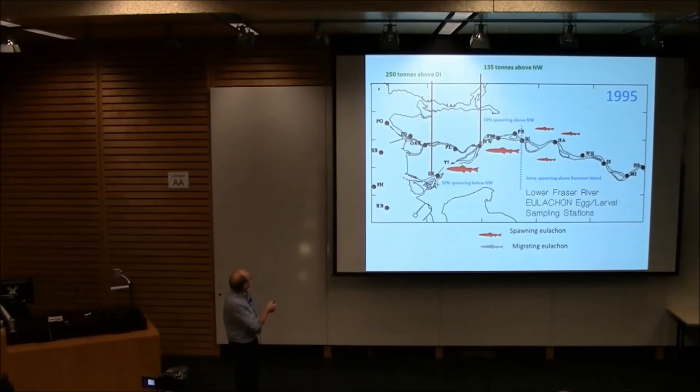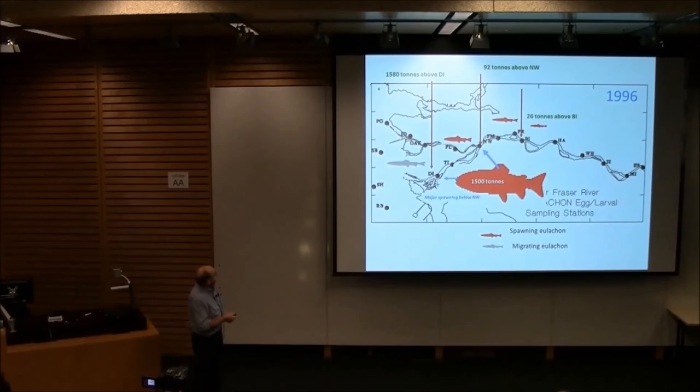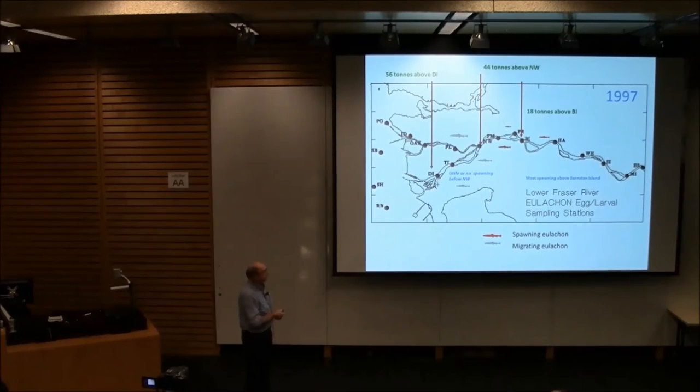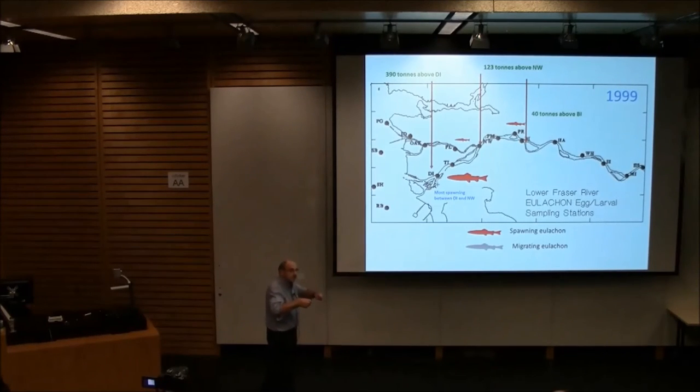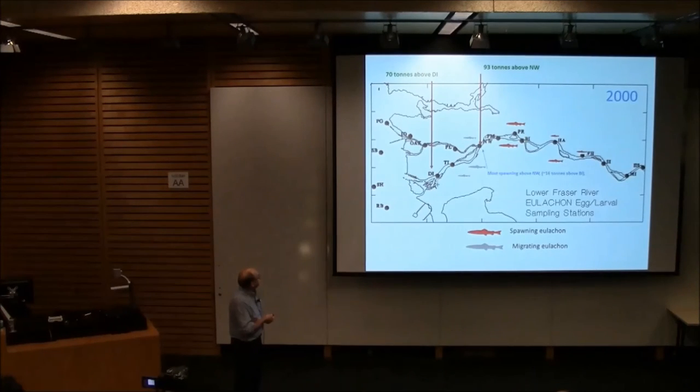In 1996, just after everyone was worried, there was a bonanza—a huge year. We estimated over 1,580 tons, and most of these fish were spawning between Deas Island and New Westminster. In 1997, down to 56 tons, and again most of them were above New Westminster. 1998, no spawning at all below Westminster and some above Barnston Island. 1999, the same sort of thing. When you go through time by time, you can figure out roughly what the total biomass is and roughly where they spawn.